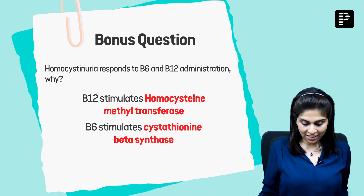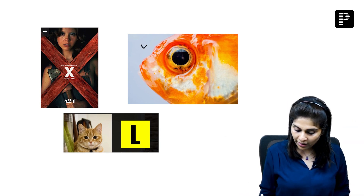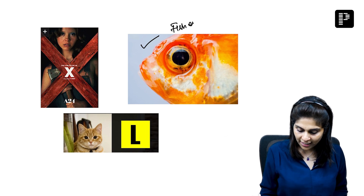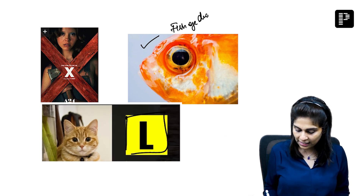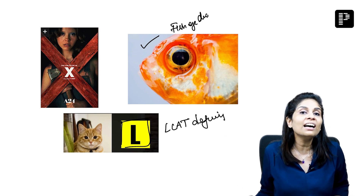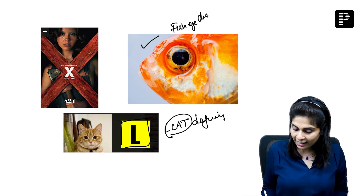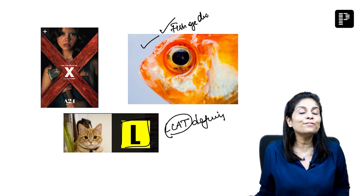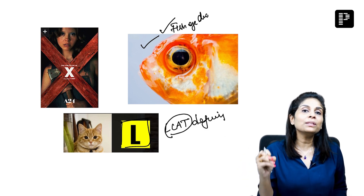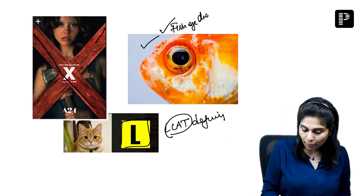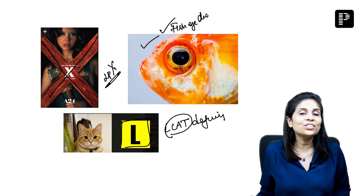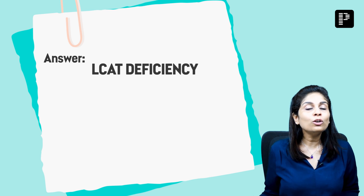Let's discuss the next question. Give yourself 45 seconds. There is a fish with an eye — that stands for fish eye disease. And there is a cat with 'L' — that stands for LCAT. LCAT deficiency will present as fish eye disease. The way to remember this: the favorite food of a cat is fish. So LCAT deficiency presents as fish eye disease or corneal opacity. On lipoprotein electrophoresis, LCAT deficiency presents with an abnormal band caused by lipoprotein X. So this triad stands for LCAT deficiency.